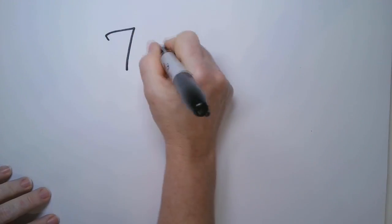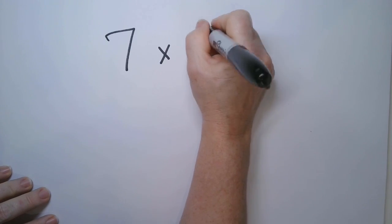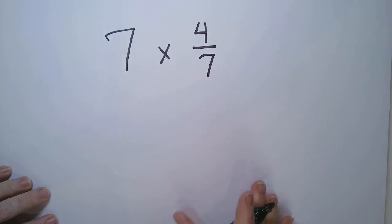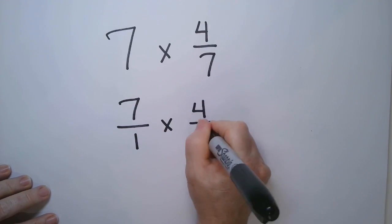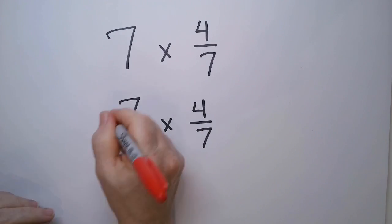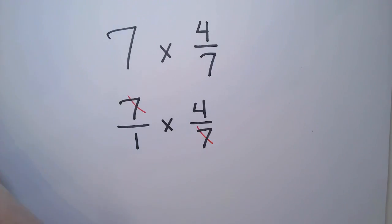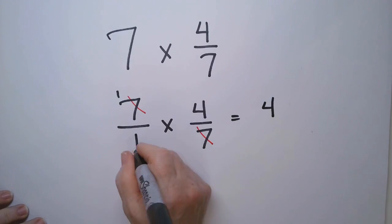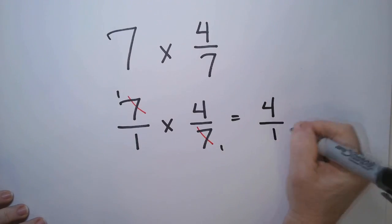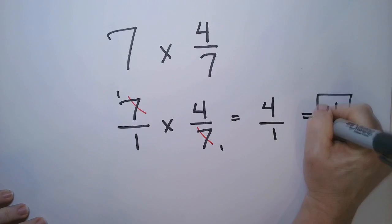Let's practice more problems. Suppose I have 7 times 4 sevenths. So that's 7 over 1 times 4 over 7. Do you see how the 7s cancel? So this becomes 1 times 4, which is 4. This becomes 1 times 1, which is 1. So we write that answer as 4.